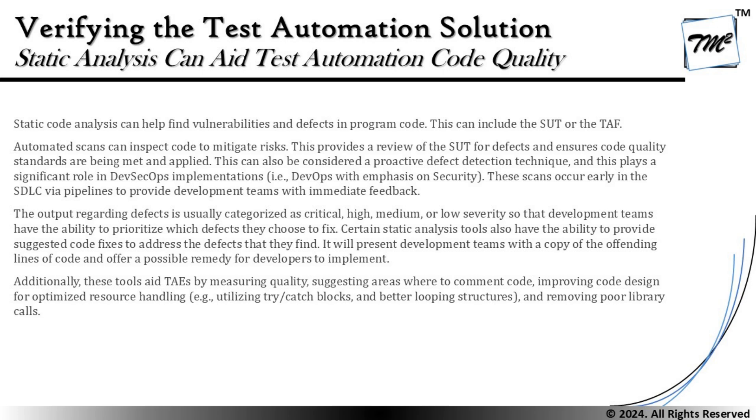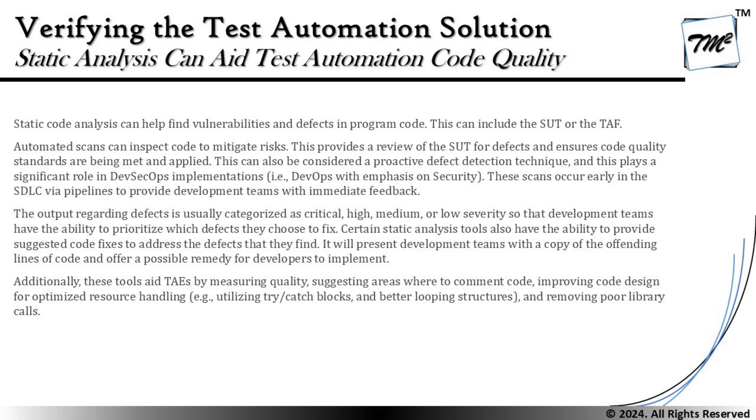These scans occur early in the SDLC via the pipeline to provide development teams with immediate feedback. As covered in the foundation level, development can have these automated as part of the DevOps pipeline. The reason we automate these is to get early and frequent feedback — every time code is checked in, it is statically analyzed for cleanliness and secure coding practices, ensuring no loopholes are merged with other code. The output regarding defects is usually categorized as critical, high, medium, or low in terms of severity.